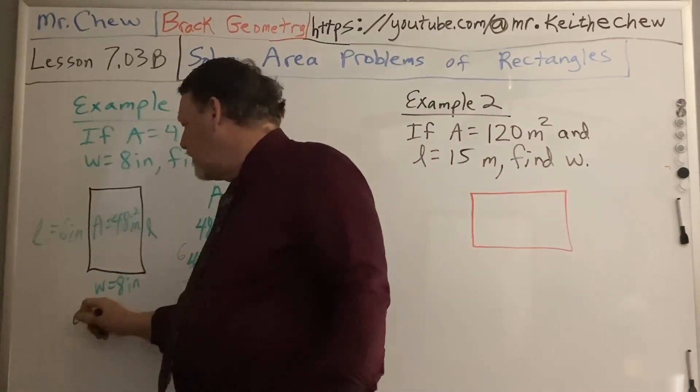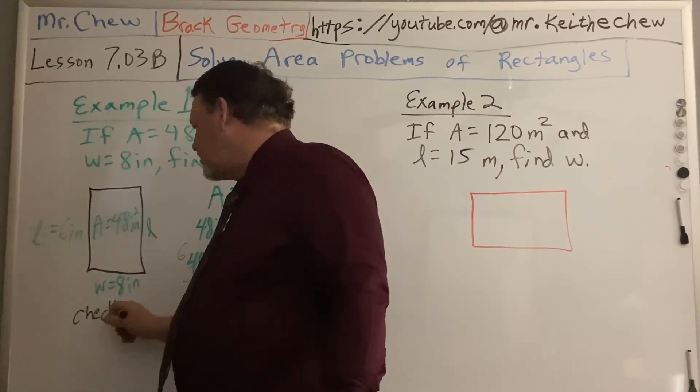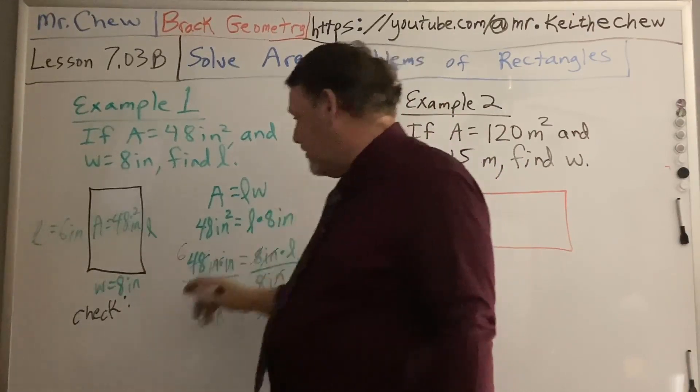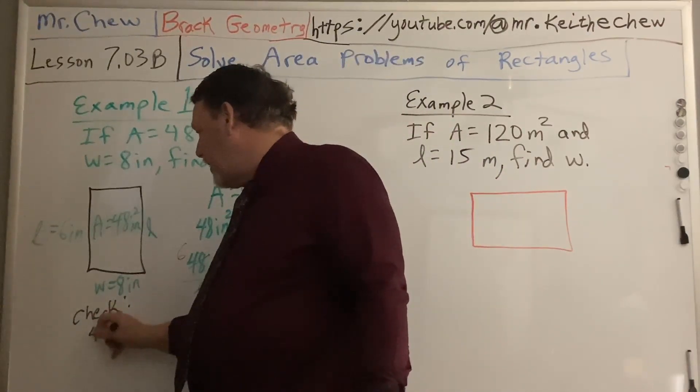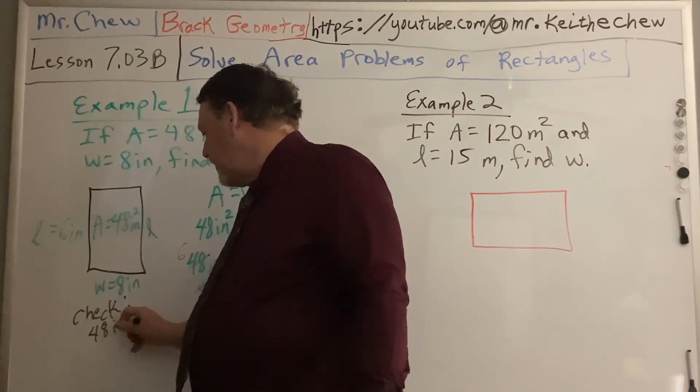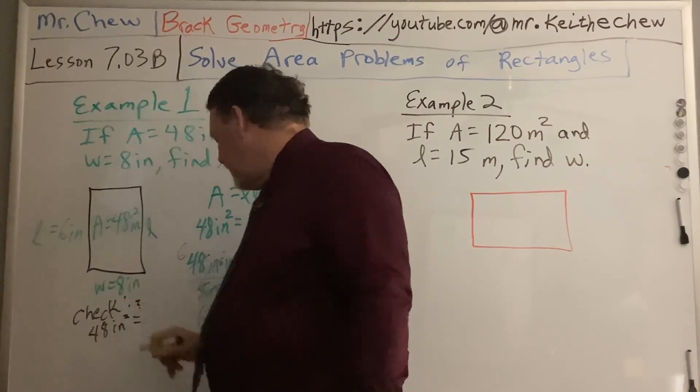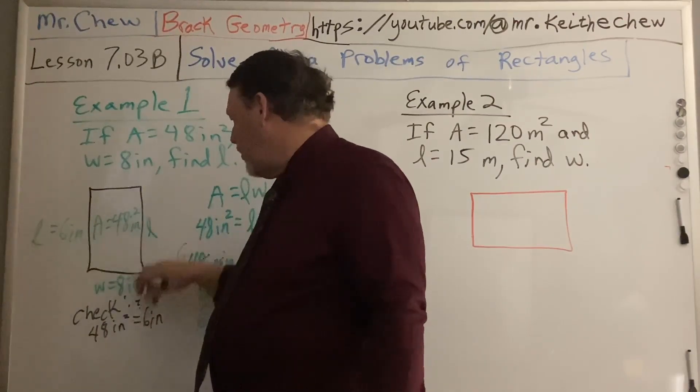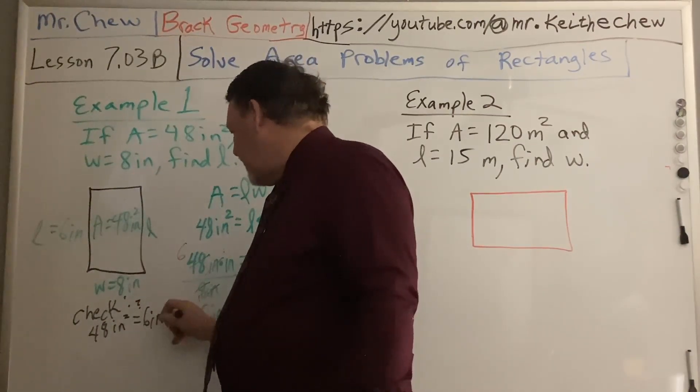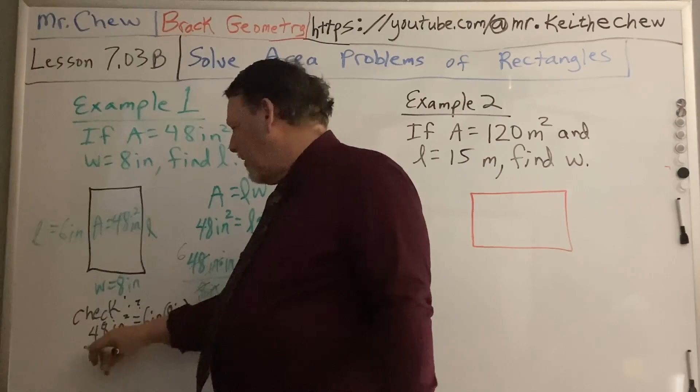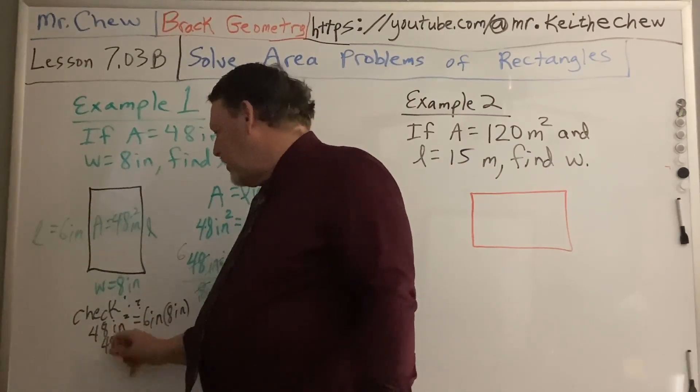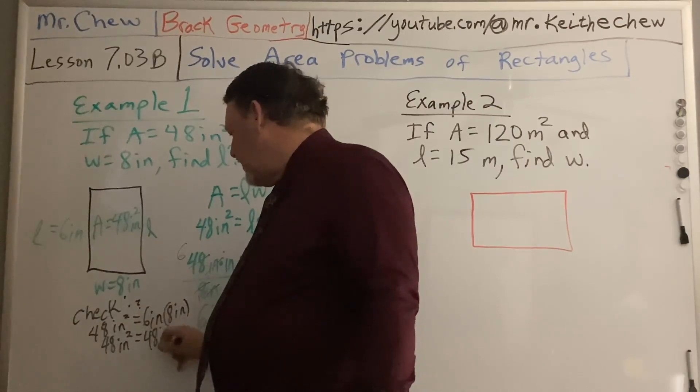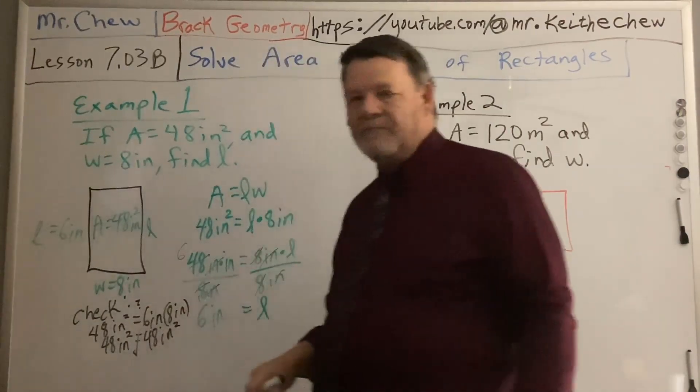These would both be 6 inches and these would both be 8 inches. So on my check here, I would just substitute in this equation here. So I put my area and then my length, which is 6 inches, times my width, which is 8 inches. And 48 inches squared equals 48 inches squared, check. Pretty simple.